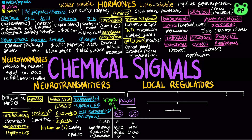Local regulators are involved in paracrine signaling, which elicits responses in nearby target cells. Nitric oxide and carbon monoxide are both classified as neurotransmitters and local regulators. Another class of local regulators include eicosanoids, which are derived from polyunsaturated fatty acids such as arachidonic acid and eicosapentaenoic acid, or EPA.